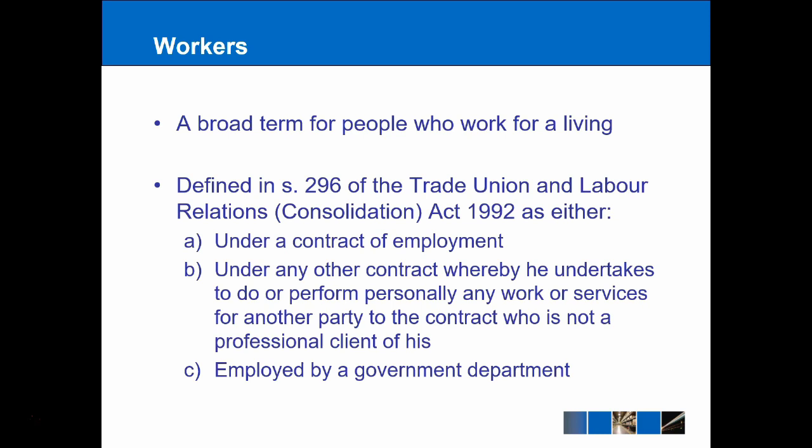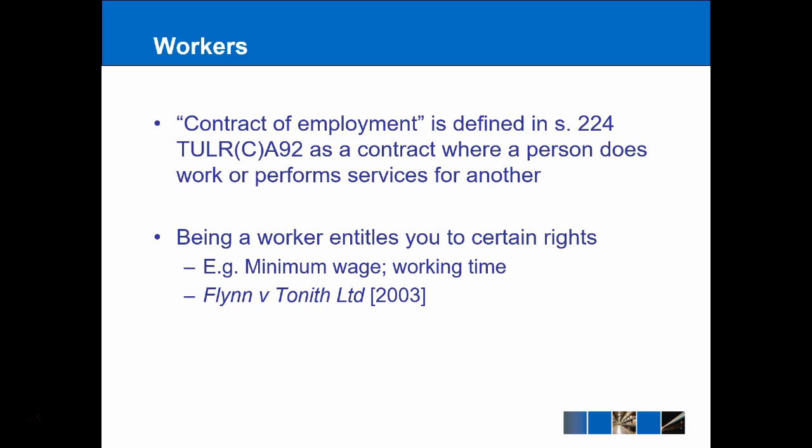Workers is simply talking about people who work for a living. For a more precise definition, we can look at Section 296 of the Trade Union and Labour Relations Consolidation Act 1992, which sets out three alternative definitions for a worker. Part A of that definition refers to a contract of employment, itself defined in Section 224 of the 1992 Act as a contract where a person does work or performs services for another. We can get a good sense of this in the 2003 case of Flynn and Tonnith Limited: even though Flynn was a self-employed person, he was still under a contract to perform services and was therefore entitled to rights under the National Minimum Wage Act 1998 and to a certain amount of holiday time.